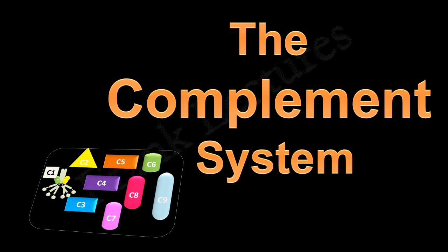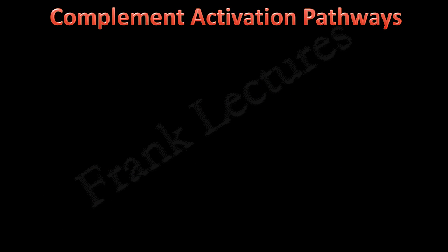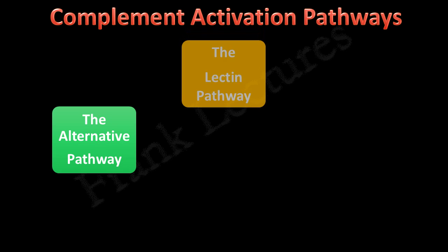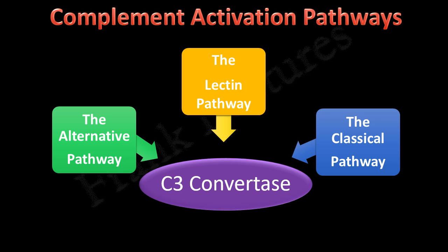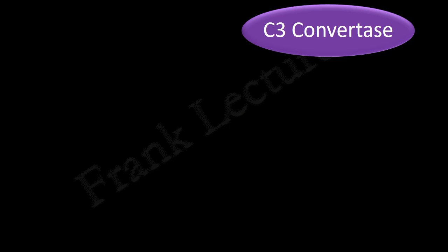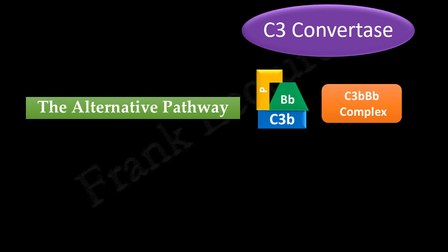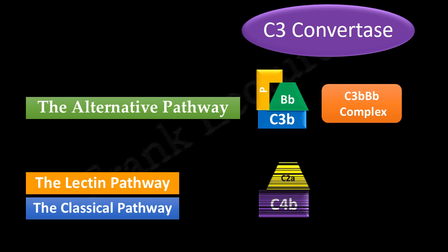The complement system. We have studied all three pathways of complement activation: the alternative pathway, the lectin pathway, and the classical pathway. All these pathways generate C3 convertase. The C3 convertase of the alternative pathway is represented by the C3bBb complex, whereas the C3 convertase of the lectin and classical pathway is represented by the C4b2a complex.